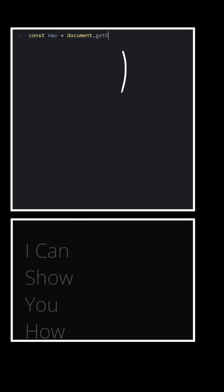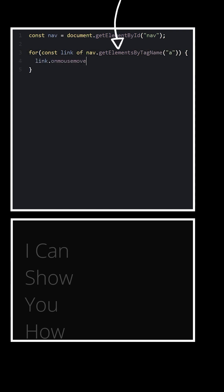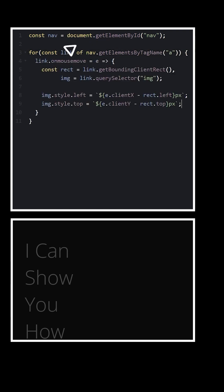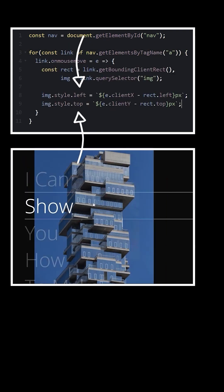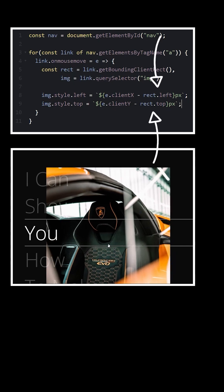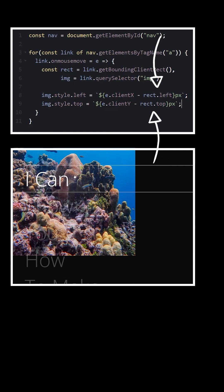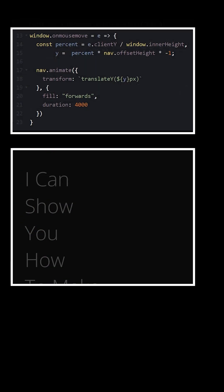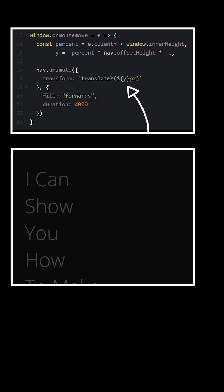Select the nav element, cycle through the links, and listen for mouse events. Use the mouse's current position to set the image's position, but make sure to offset these values based on the position of each link. Finally, convert the mouse's Y position to a decimal, and use it to animate the nav element up and down.